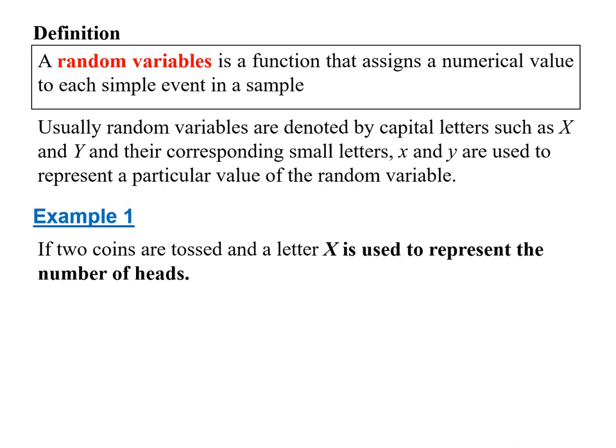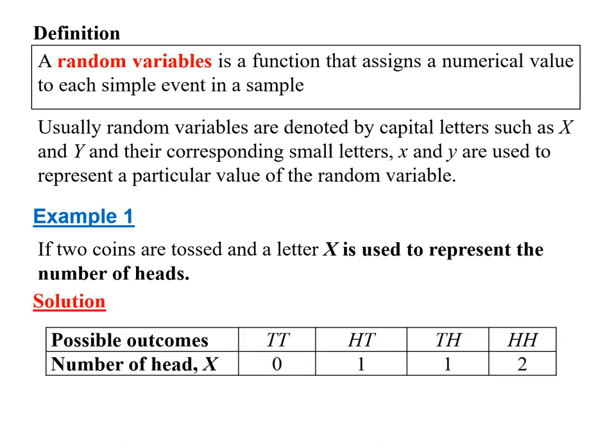Example 1: if 2 coins are tossed and a letter x is used to represent the number of heads, the possible outcomes are: heads and tails is 1, tails and heads is 1, and heads and heads is 2. The values of x are 0, 1, 2.